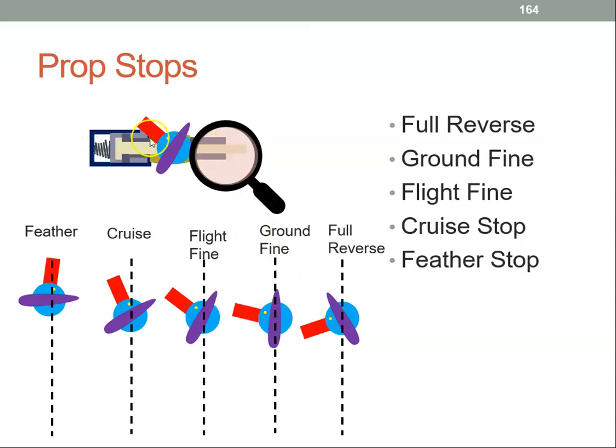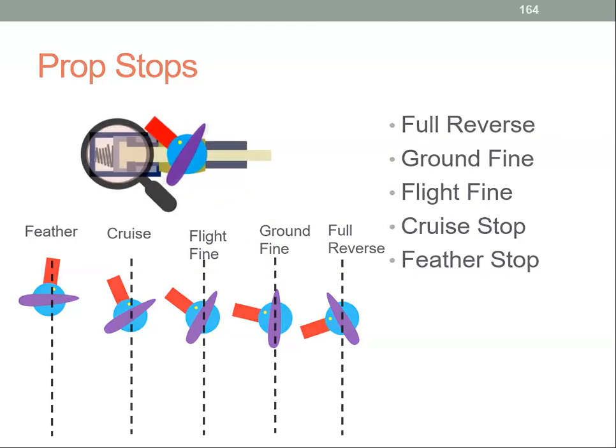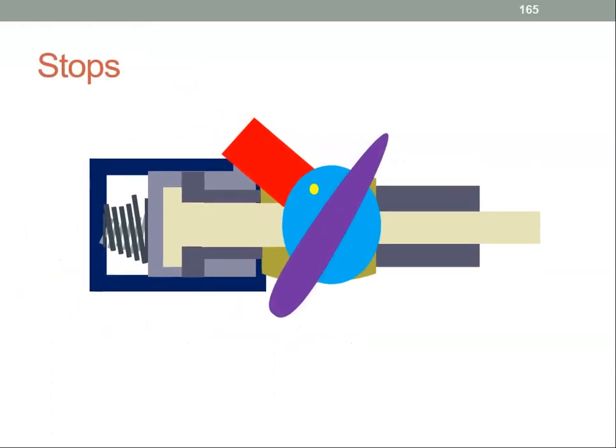We're going to zoom in here on our propeller and the propeller piston inside the propeller hub. I just want to get rid of this counterweight here. Here is the piston and it can move along this rail here.